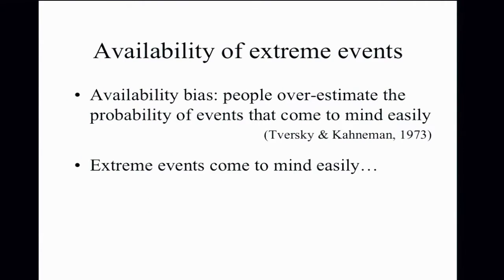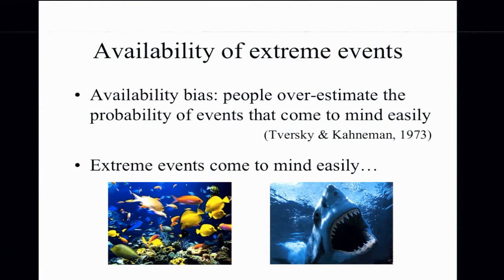The first example is the availability of extreme events — a manifestation of the availability bias. If you ask people to estimate how probable something is, they base that estimate not on actual probabilities but on how easy it is to generate examples. Extreme events come to mind easily, so people seem to overestimate their probability. Thinking about going snorkeling, you should think about fish, but instead you're probably thinking about shark attacks — people significantly overestimate probabilities of shark attacks, terrorist attacks, plane crashes.